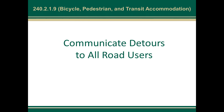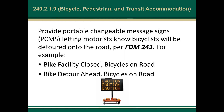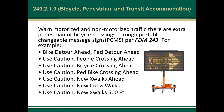We also want to communicate detours to all road users. Provide portable changeable message signs letting motorists know bicyclists will be detoured onto the road, per FDM 243 — for example: 'bicycle facility closed,' 'bicycles on road,' 'bike detour ahead,' 'bicycles on road.' We may also want to provide extra communication if there are going to be additional crossings — providing portable changeable message signs to let folks know there would be extra pedestrian or bicycle crossings, with some examples of what those messages might look like.